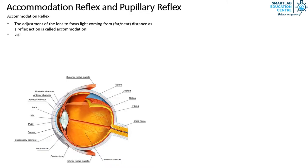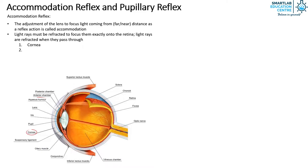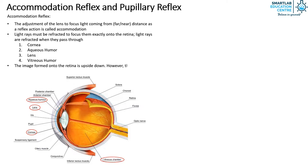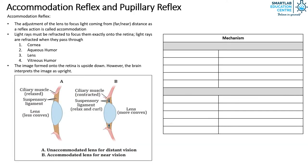Light rays must be refracted to focus them exactly onto the retina, and they are refracted when they pass through the cornea, aqueous humor, lens, and vitreous humor. The image formed onto the retina is upside down; however, the brain interprets the image as upright. Let's explore the mechanism in greater detail.